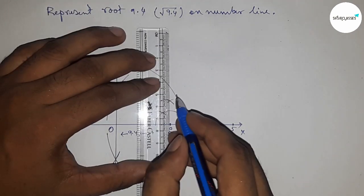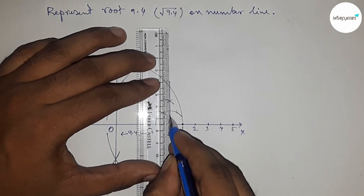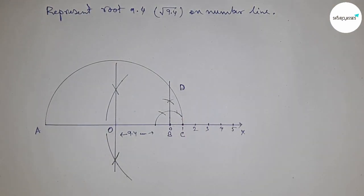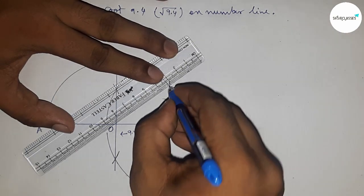Join the line which meets the semicircle at point D. This is point D. Next, join O and D.